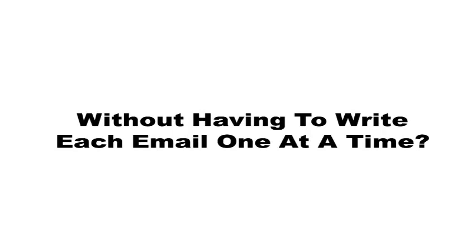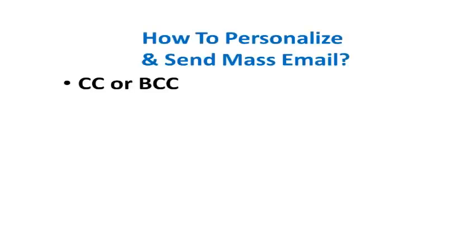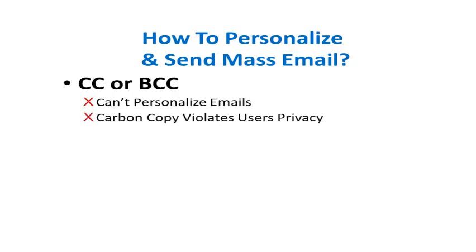One option is you could utilize what's called a CC or BCC — carbon copy or blind carbon copy. Regardless of what email service you're using — Hotmail, Gmail, Outlook — there's a line that says CC or BCC. The problem with that is you can't personalize those emails, and personalizing your emails is the most important thing in getting a high response rate. Carbon copy also violates user privacy because it shows all the people who are on the mailing list.